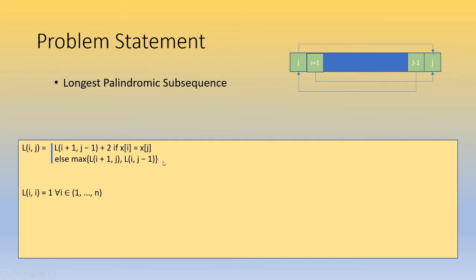...then you take the max of those two previous solutions. Now another thing to keep in mind is that the longest palindromic subsequence of the same character is one, which means that if you take a look at i and i, that by definition is going to be one, and every other solution is based on top of that.